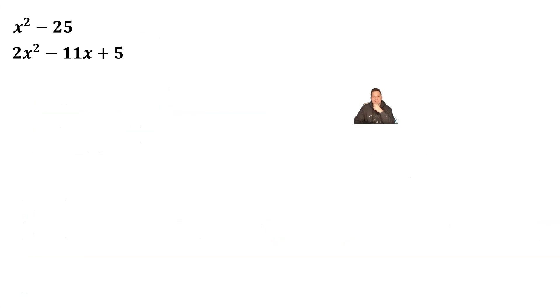Hello everyone, in this one we're going to take a look at finding the least common multiple of x squared minus 25 and 2x squared minus 11x plus 5. That's just a lot of factorization. Again, the least common multiple of those two.